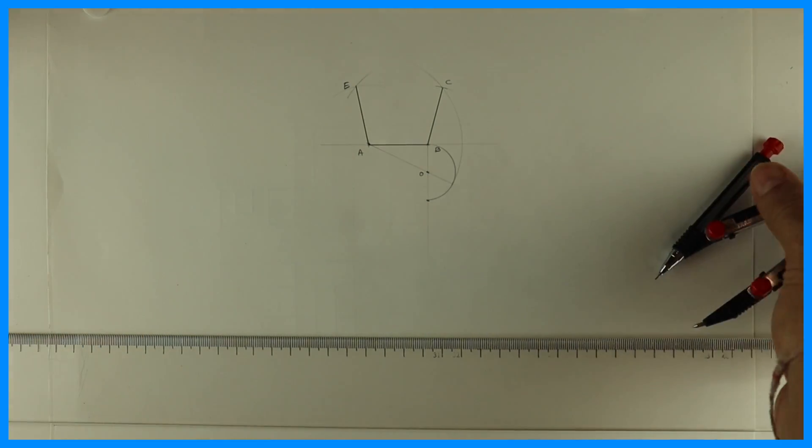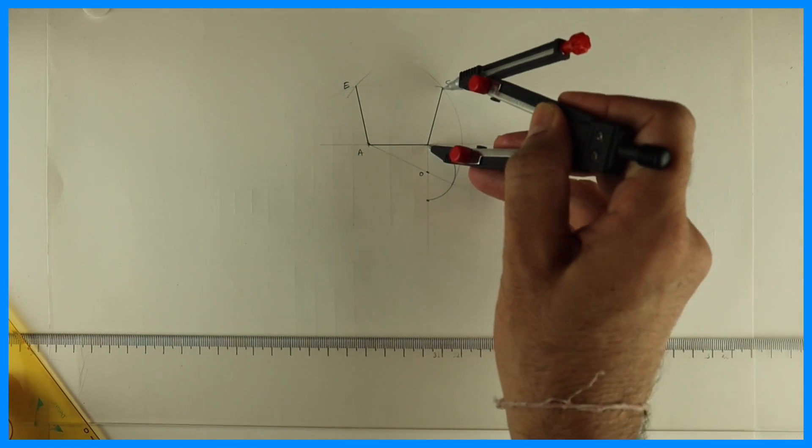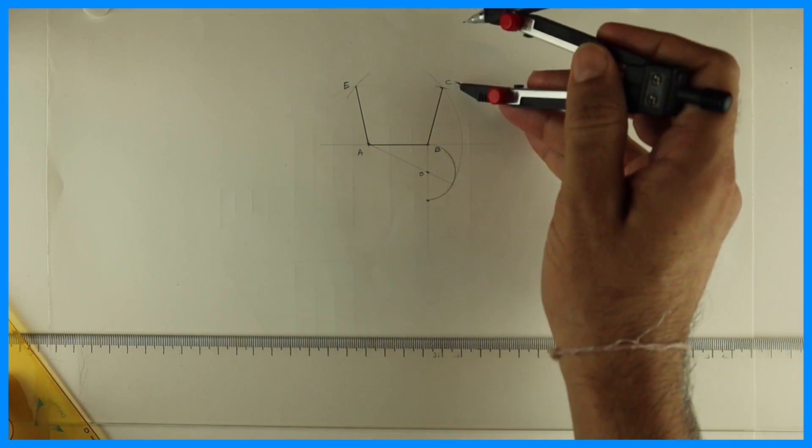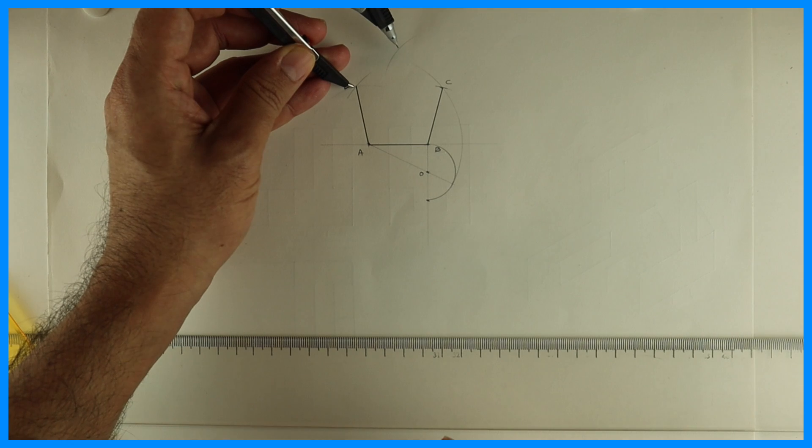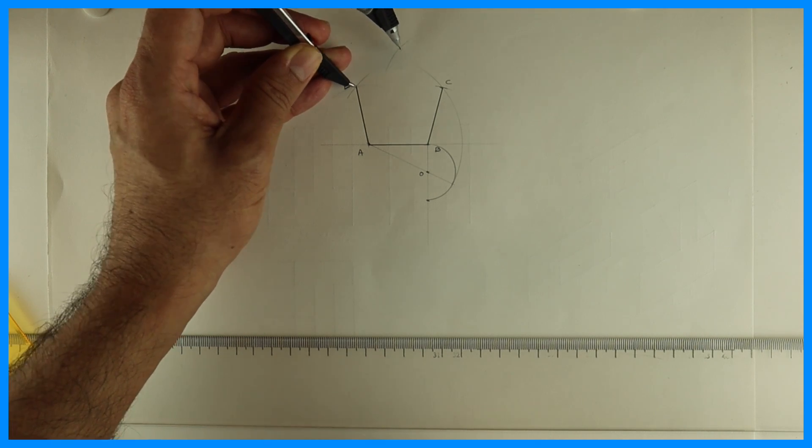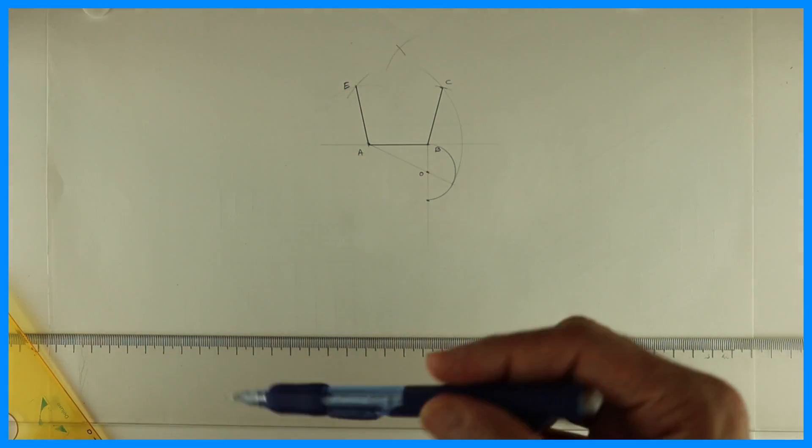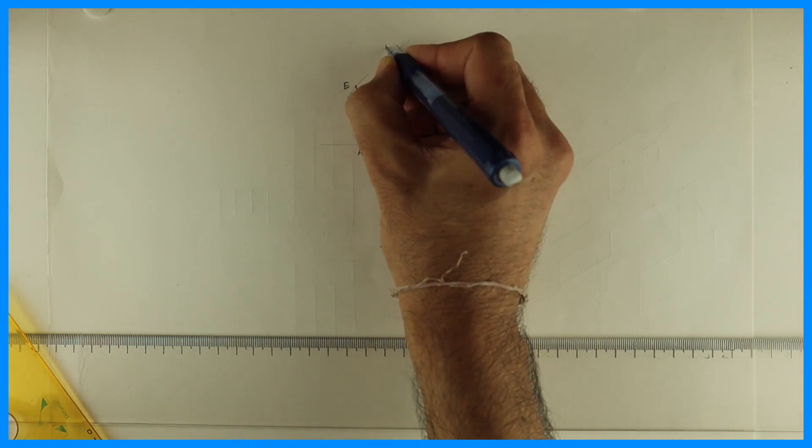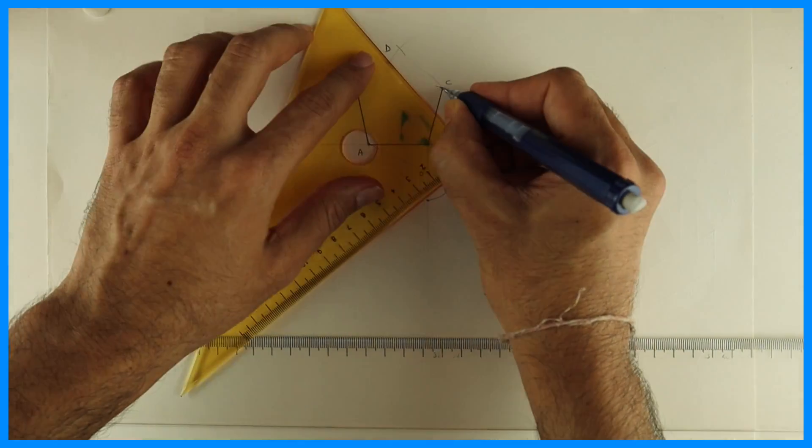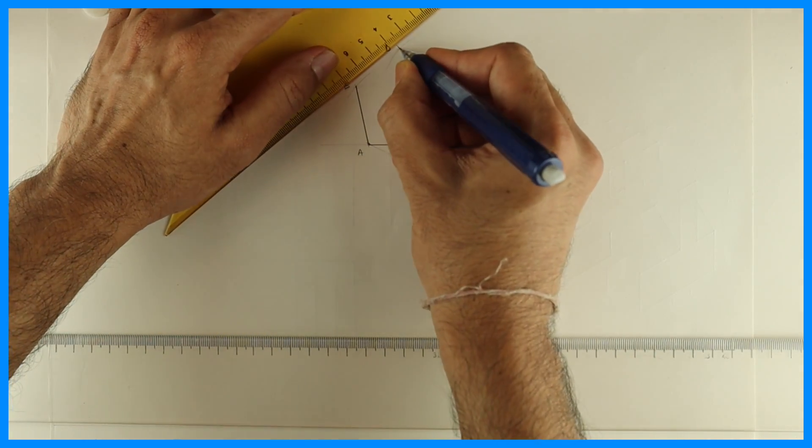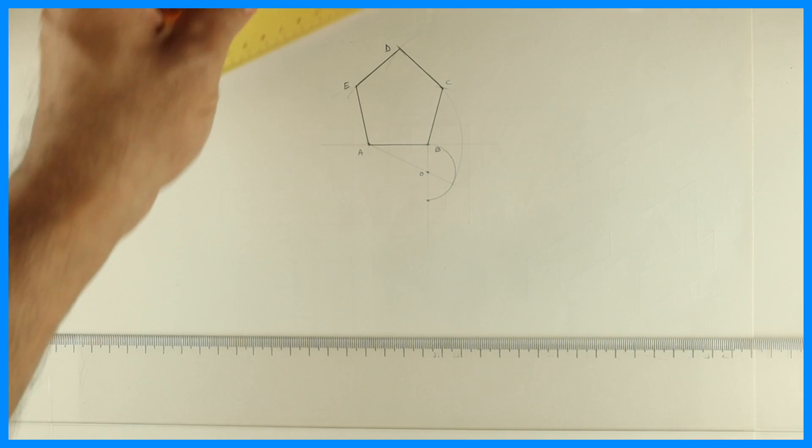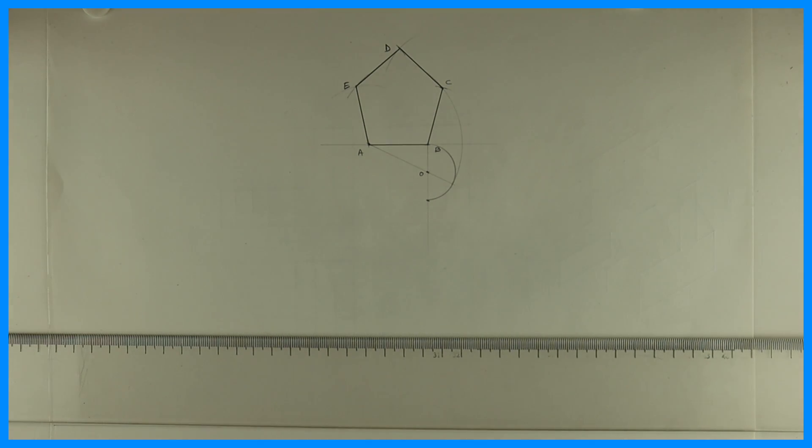Now we take side AB. Same way BC and you cut on this side and from E you cut on this side. So we'll get a regular pentagon. So this is one more method to draw a pentagon. Now we will prove that how one of the internal angle is 108.